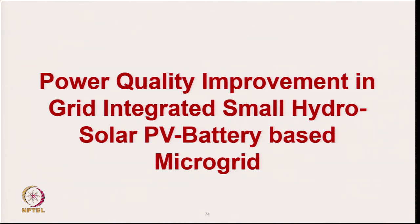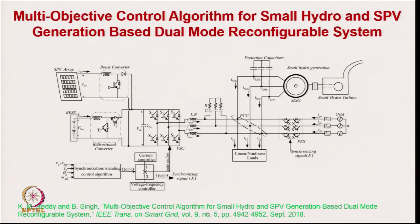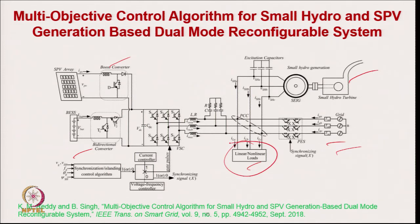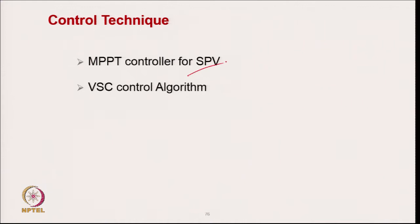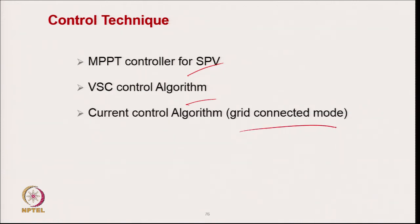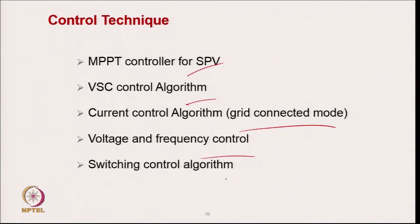Coming to power quality improvement in grid-integrated small hydro-solar PV battery based microgrid. The system has a small hydro connected to the system, solar, and a battery, with synchronization and islanding to the grid. This system using solar and small hydro can practically happen on a canal — you can have solar panels as well as a small run-of-river hydro plant. With battery storage you can exchange power with the grid when available, and feed the local load when grid is absent. Controls include: MPPT for solar, current control in grid-connected mode, voltage and frequency control in islanding mode, switching algorithm for synchronization and islanding, and bi-directional current control.